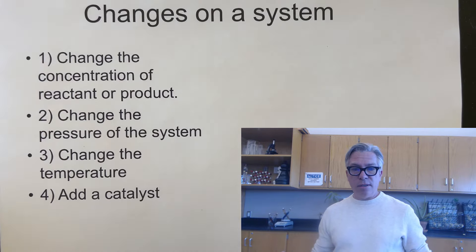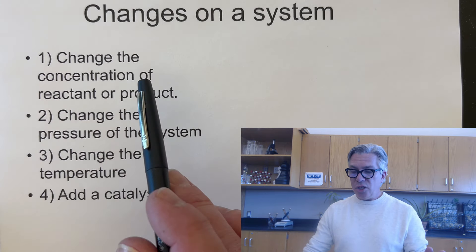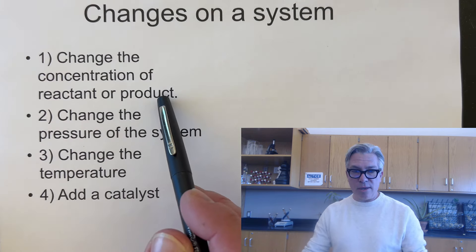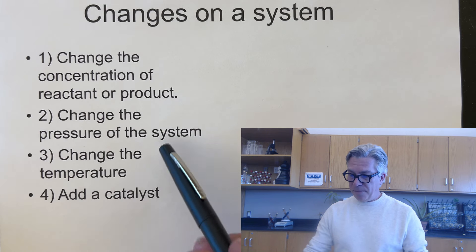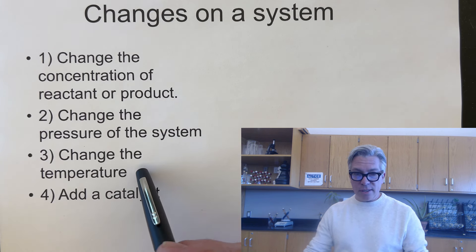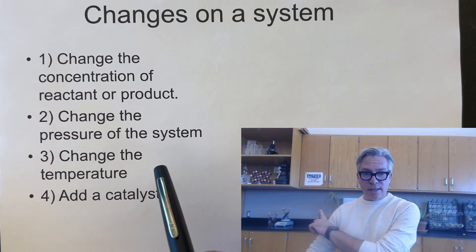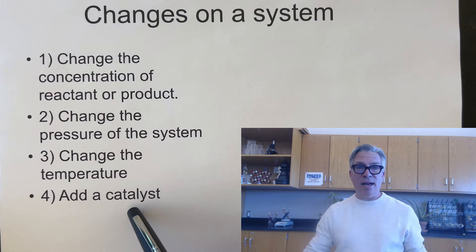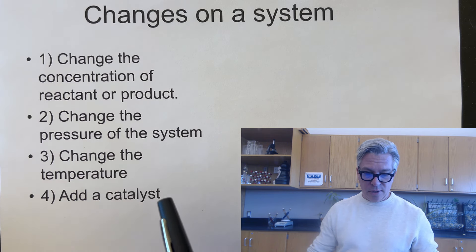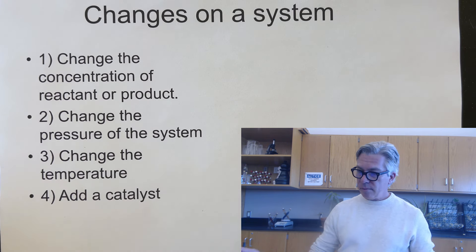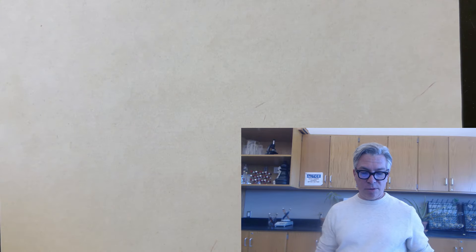The changes on the system we're going to cover today are: changing the concentration of a reactant or product, changing the pressure of the system, changing the temperature of the system (which is what I was doing over there with the test tubes), and adding a catalyst to the system.